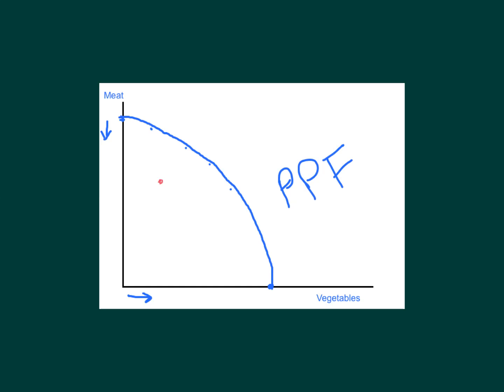I can also make a point inside the PPF — anywhere inside is a possible point, and any point on the line is also possible. What is the difference? If I'm inside the PPF, I am able to keep my meat at exactly the same level and get more vegetables, all the way up to the frontier. That's why we call these points inefficient — you're not using all your resources to their fullest amount.